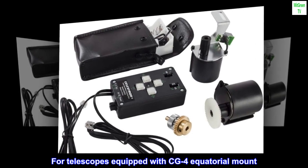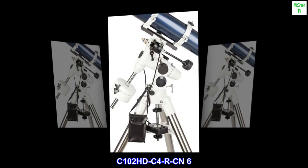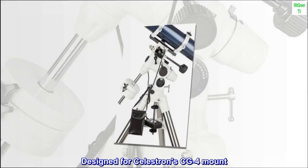For telescopes equipped with CG-4 equatorial mount. C-102 HDC-4 RCN6. Designed for Celestron CG-4 mount.